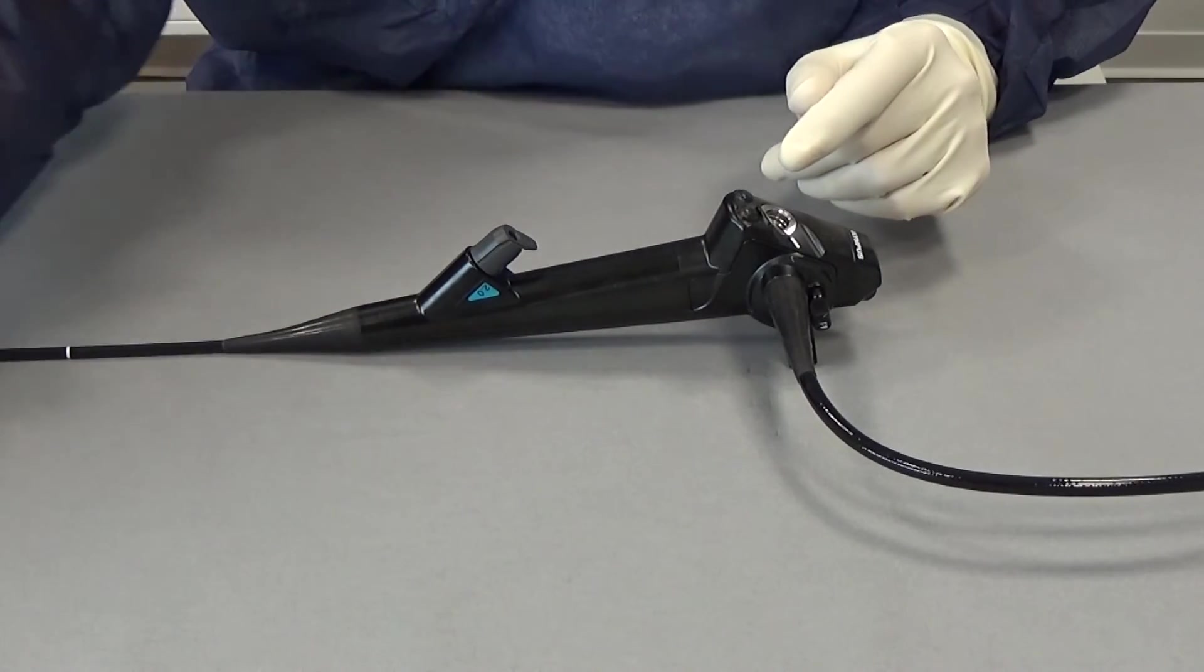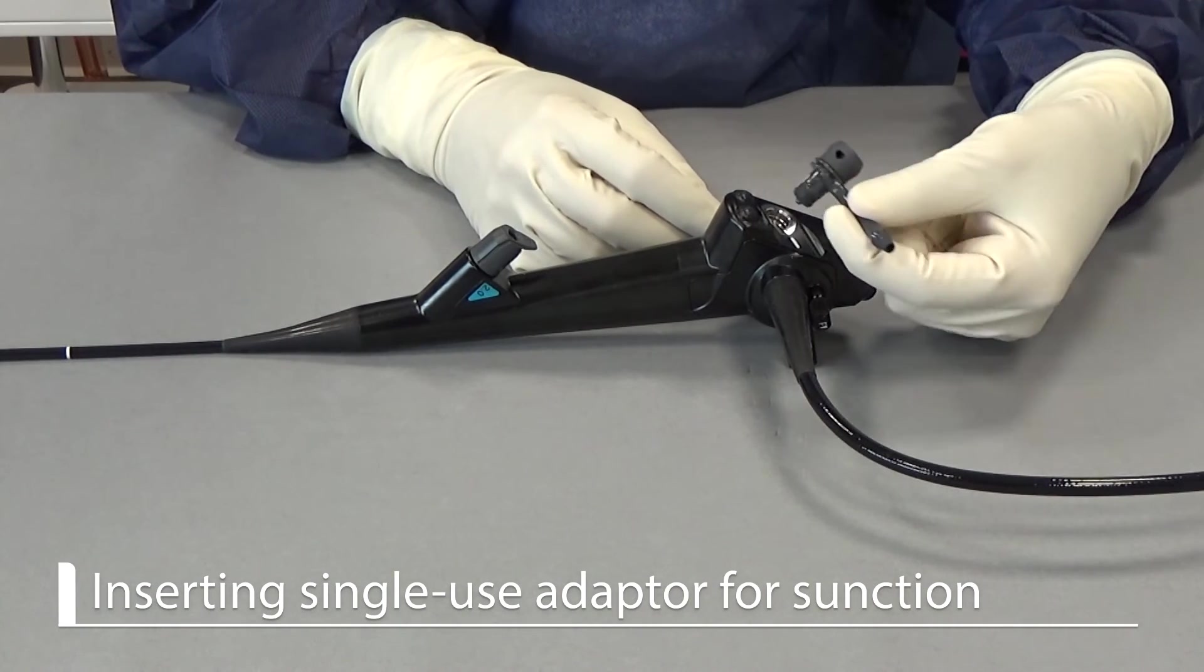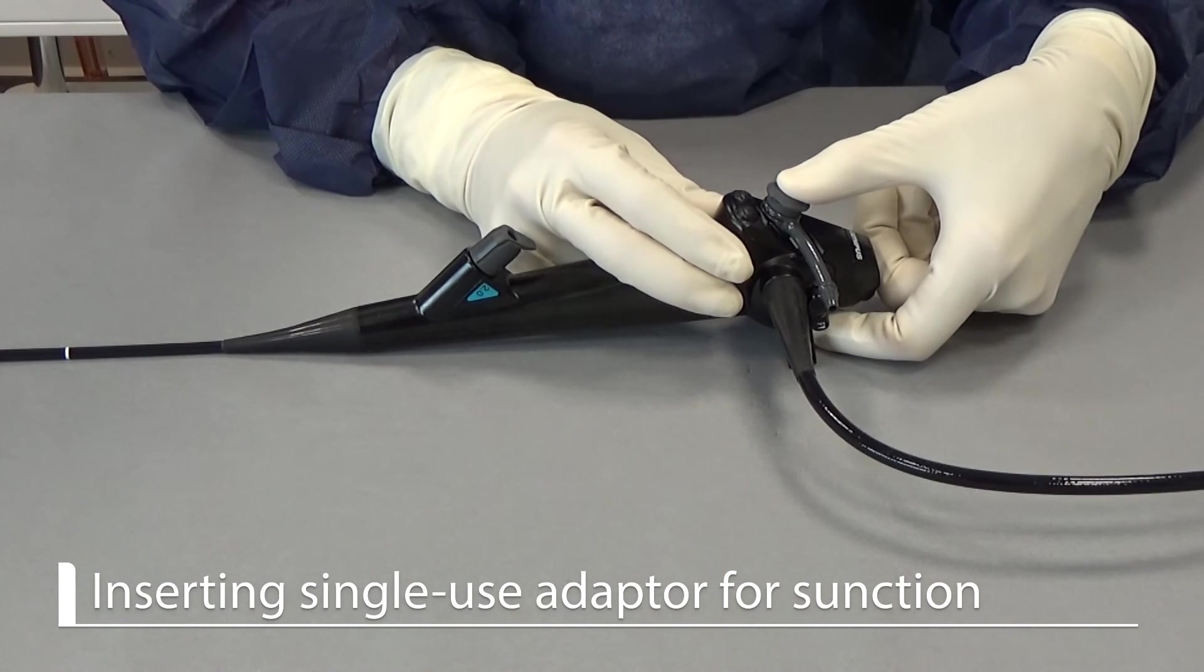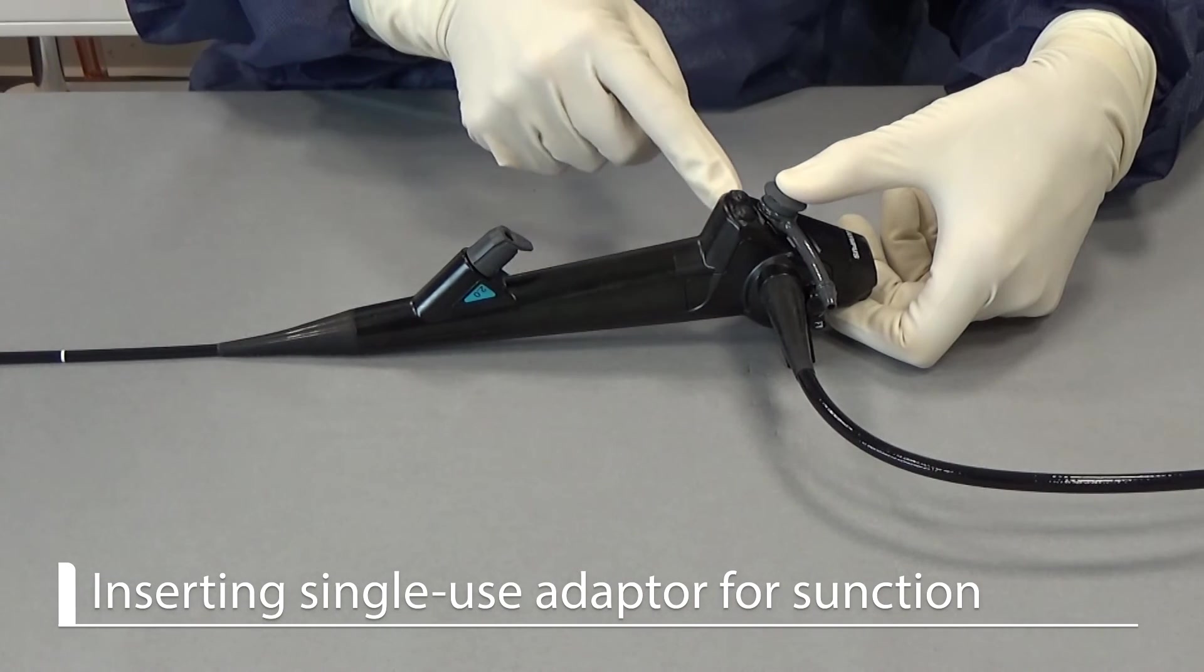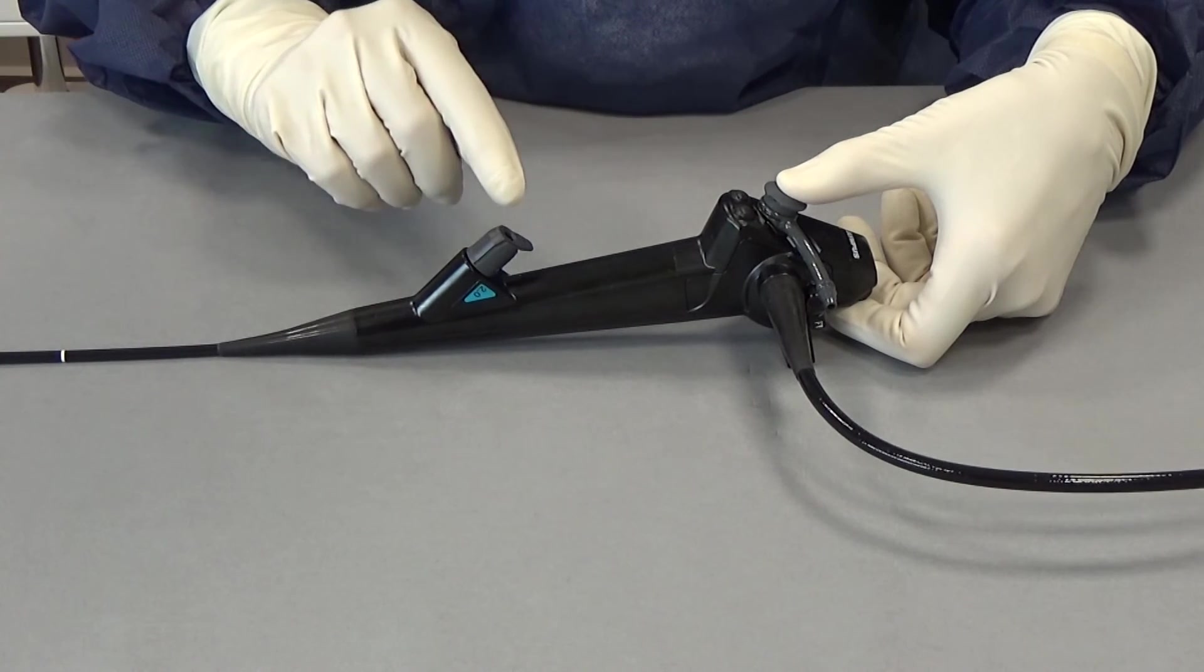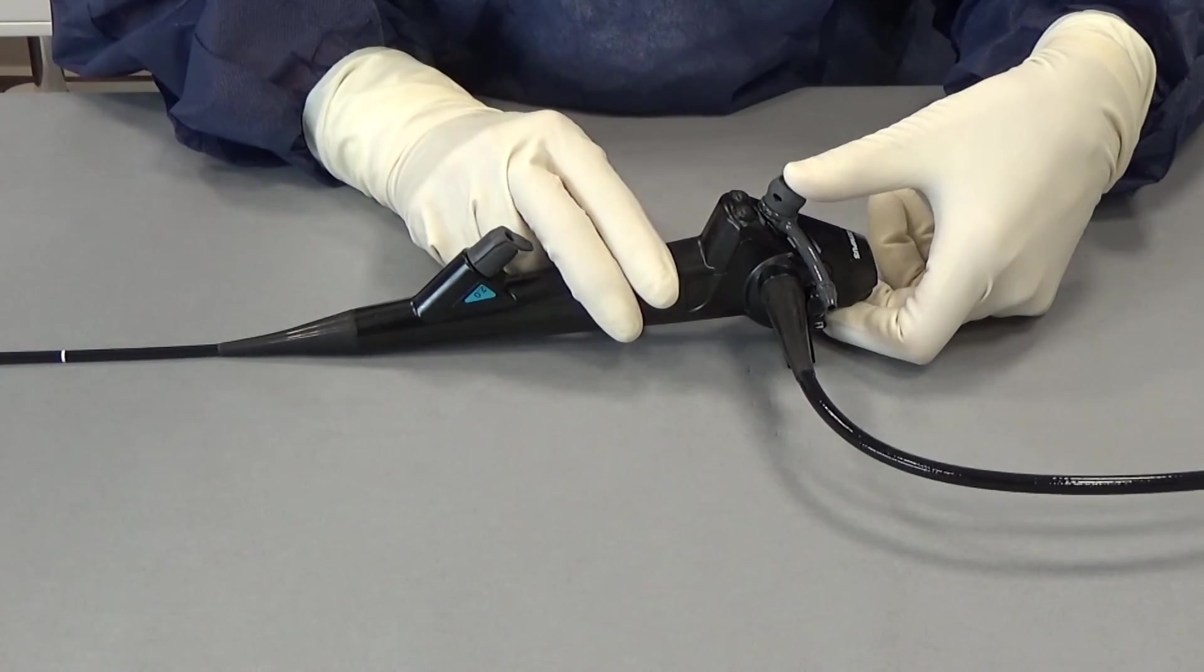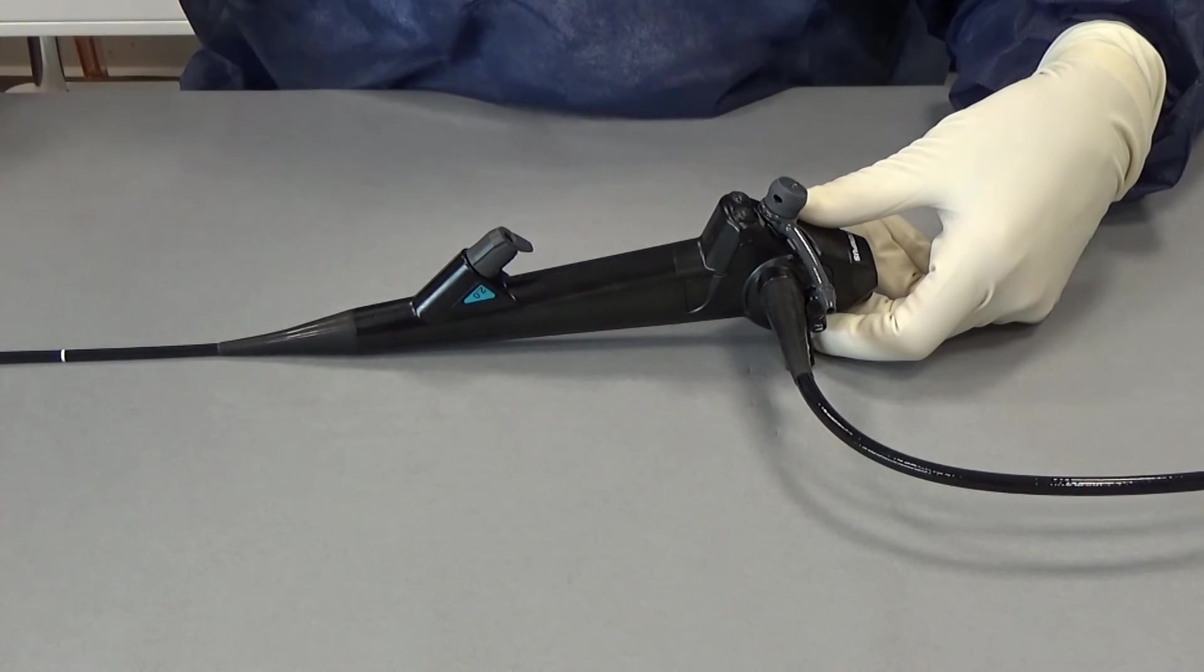For inserting the adapter for suction, you have a single use adapter that snaps into here and it has a tight airtight seal. When you press this button, a suction tube can suction out the air and the secretion that is in here. It will not suck anything from here because this, although it has a little pinhole, has a very airtight ceiling. So this is the way out of secretions and everything you want to put into the endoscope comes from this inlet.